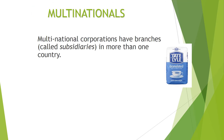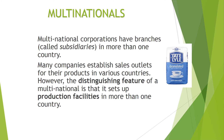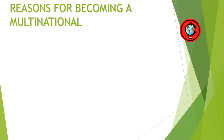Next, we're going to look at multinationals. Multinational corporations have branches — we sometimes call these subsidiaries — in more than one country, and that's what makes them a multinational. Many companies establish sales outlets for their products in various countries, for example branches of Zara in different countries. However, the distinguishing feature of a multinational is it sets up production facilities in more than one country, such as manufacturing — for example, computer giants. Some reasons why an organisation may choose to become a multinational would be an increase in market share.